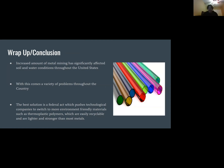The increase in metal mining has significantly affected soil and water conditions throughout the United States, bringing a large number of problems. The best solution to address these problems is to find an environmentally friendly resource such as thermoplastic polymers, which are recyclable and lighter and stronger than most metals.